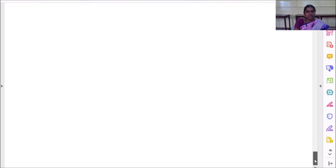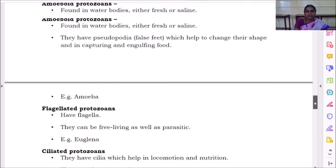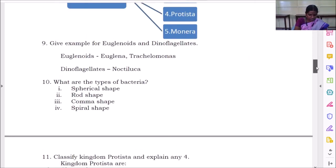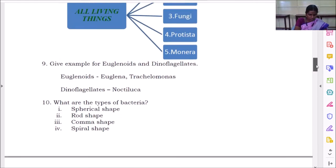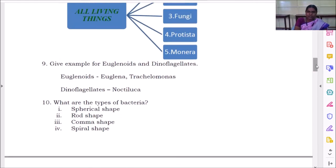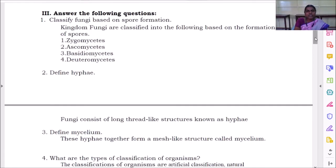So that's the revision part here. Please be thorough with all questions. Disadvantages of artificial classification, kingdom protista, then phylum in animal kingdom, and the plant kingdom classification. Everything you have to be very clear for the test. Prepare well for the test. All the best. Thank you.